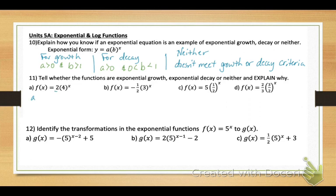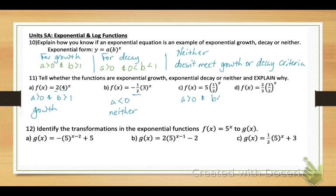Number 11: tell whether these functions are exponential growth, decay, or neither. In a, starting value 2 is greater than 0, base is 4 which is greater than 1 — growth. In b, the beginning amount is negative, so that doesn't meet the criteria — neither. In c, beginning value is 5 (positive), base is 1/2 which is less than 1 — decay. In d, beginning value is 2/3 (positive) and base is 3/2 which is greater than 1 — growth.